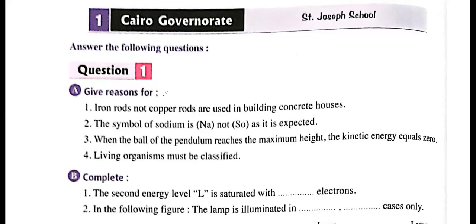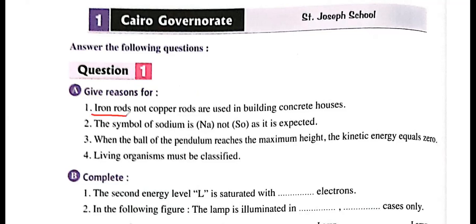We will start with question one: give reason — iron rods, not copper rods, are used in building concrete houses. When you think about building a house, you need materials that are hard. Since the hardness of iron rods is more than the hardness of copper rods, we prefer to use iron. The answer: iron rods, not copper rods, are used in building concrete houses because the hardness of iron is more than the hardness of copper.